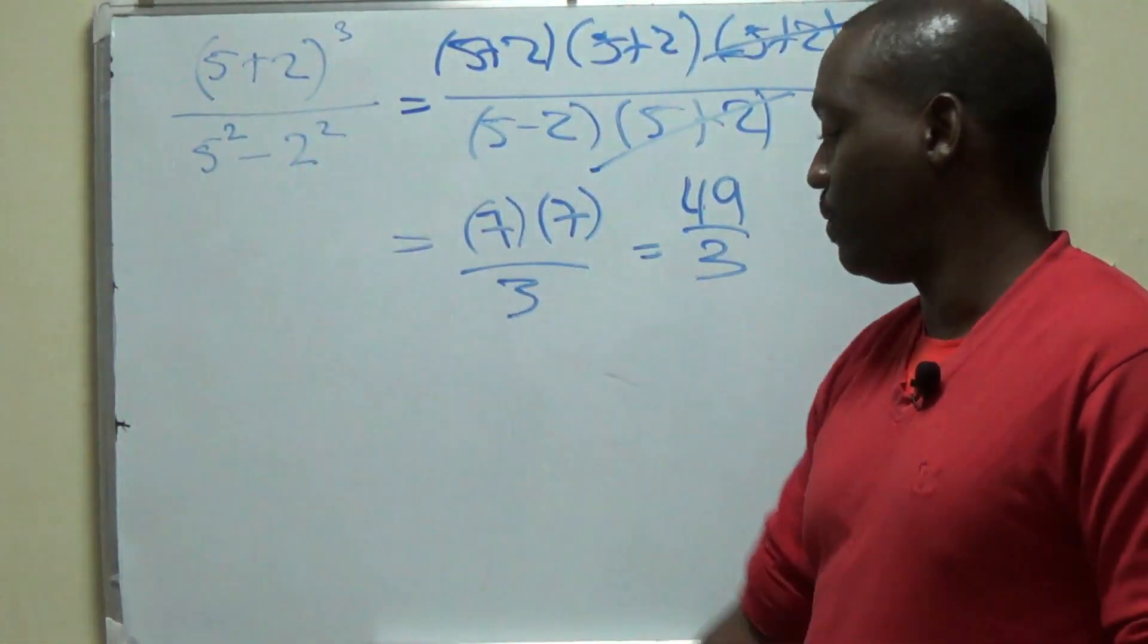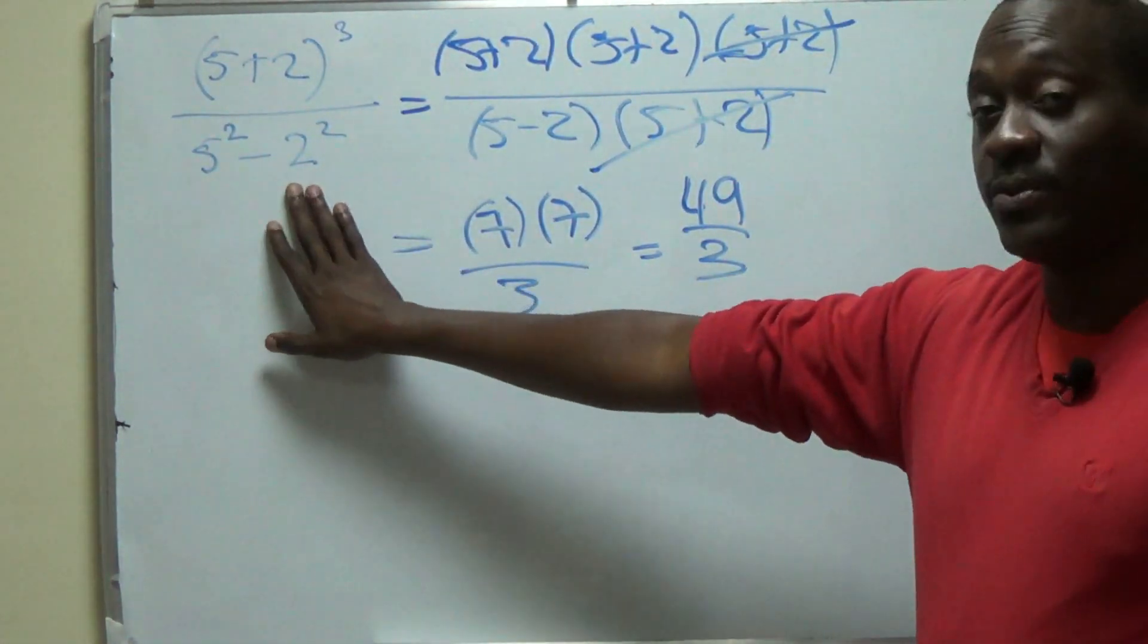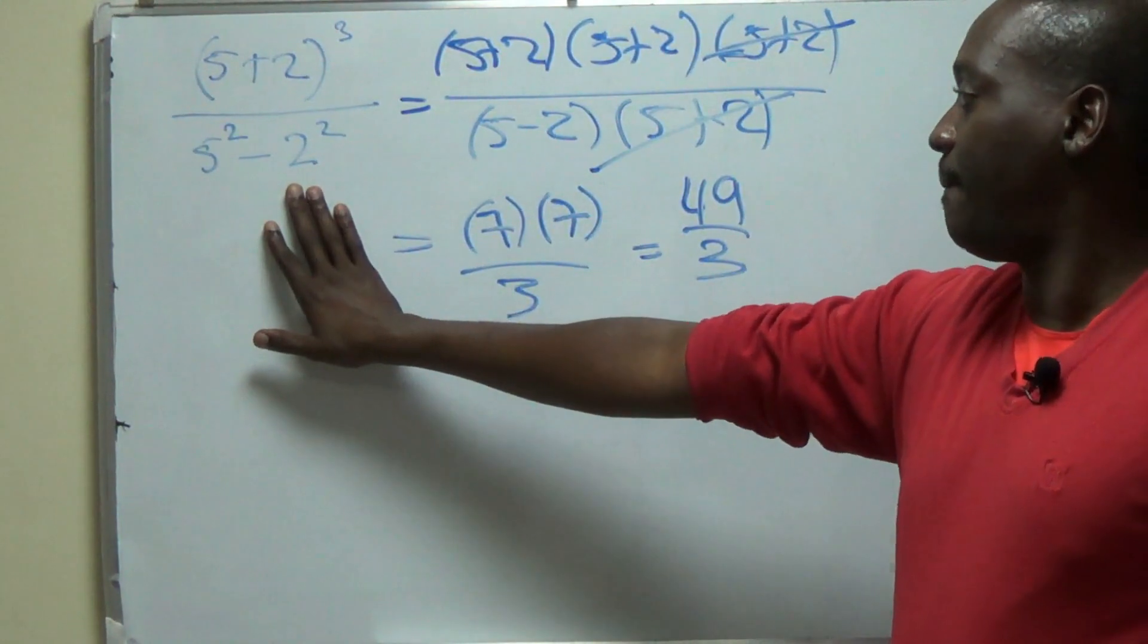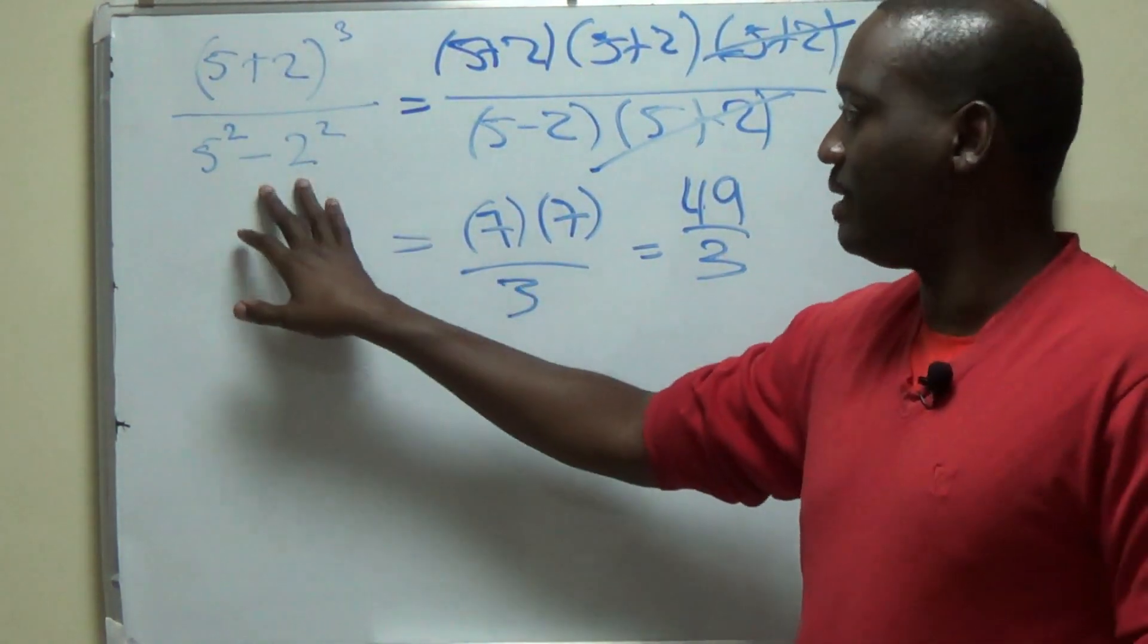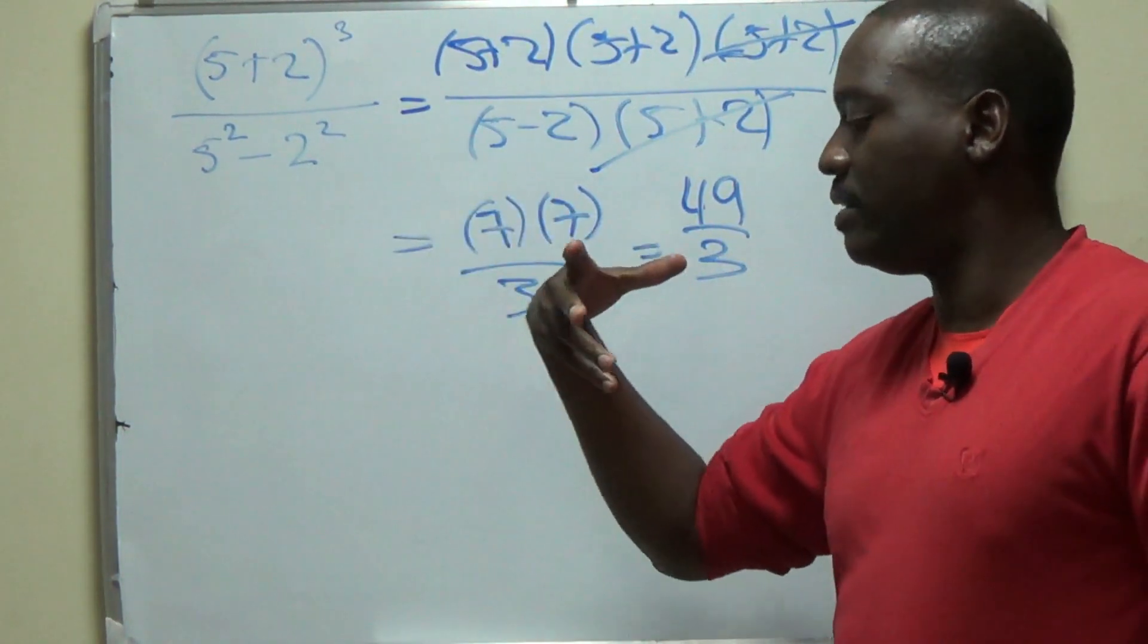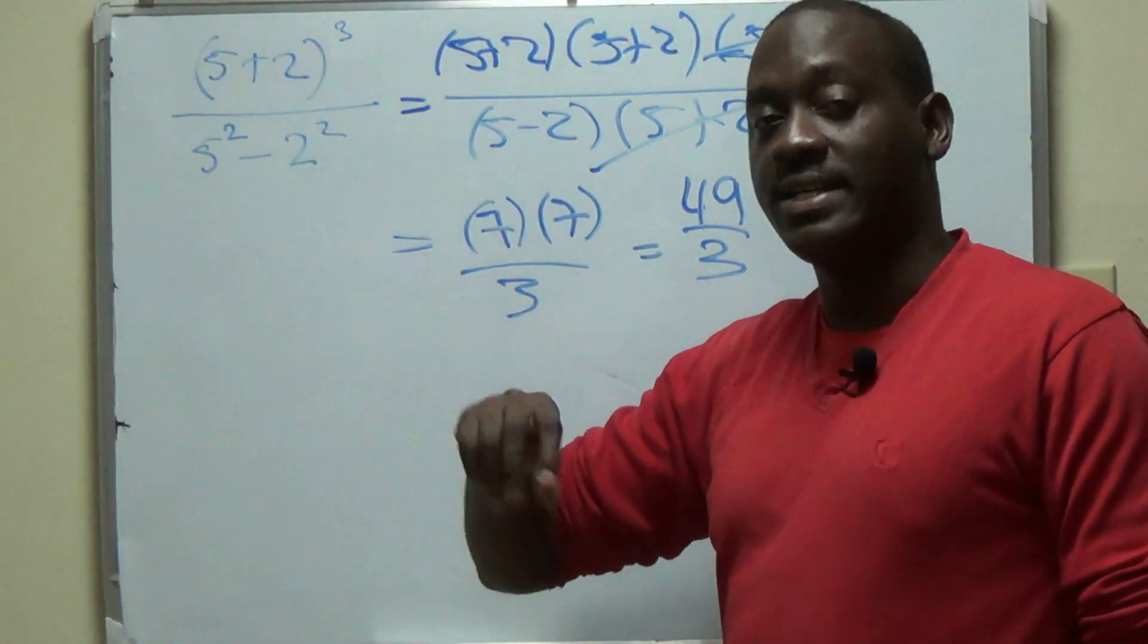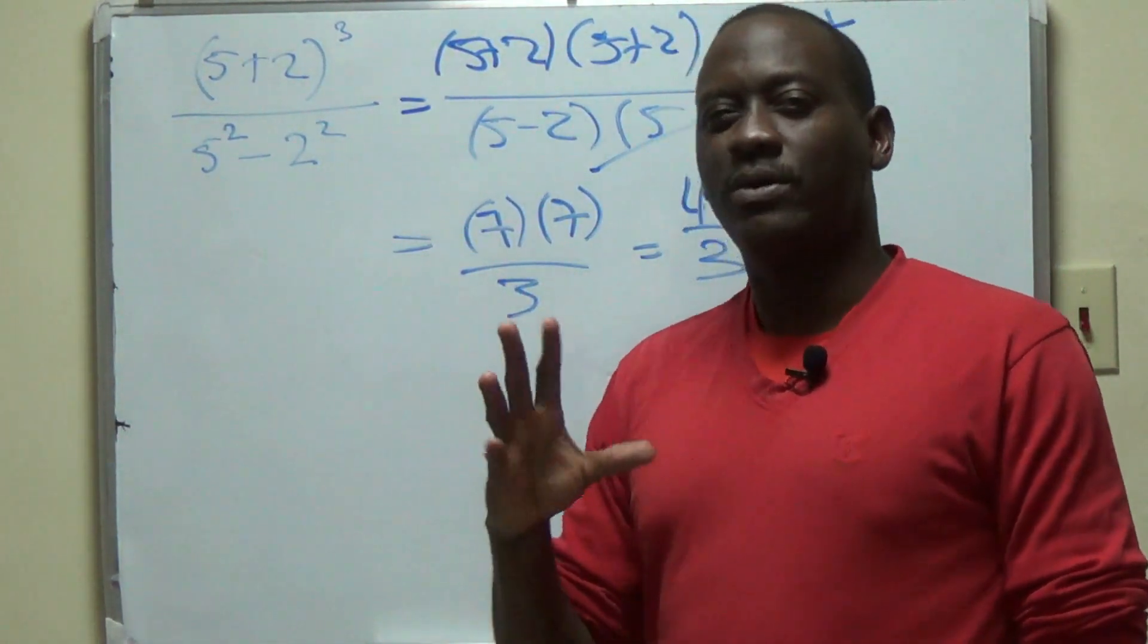Even though this method is shorter, it relies upon you being able to recognize the 5 squared minus 2 squared as a difference of two squares. If you didn't recognize that as the difference of two squares, then you have the option of actually multiplying out everything, which as you will see in a moment, would be a little more tricky.